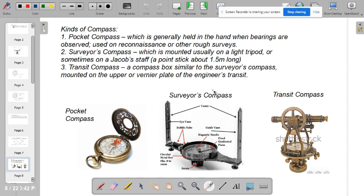So just to show you, this is a pocket compass, this is a surveyor's compass, and this is the transit compass. So a pocket compass, which is generally held in hand when bearings are observed, is used on reconnaissance or other rough surveys. And surveyor's compass, which is mounted usually on a light tripod or sometimes on a Jacob's staff, a point stick about 1.5 meters long. And this is the transit compass, a compass box similar to the surveyor's compass mounted on the upper or vernier plate of the engineer's transit.